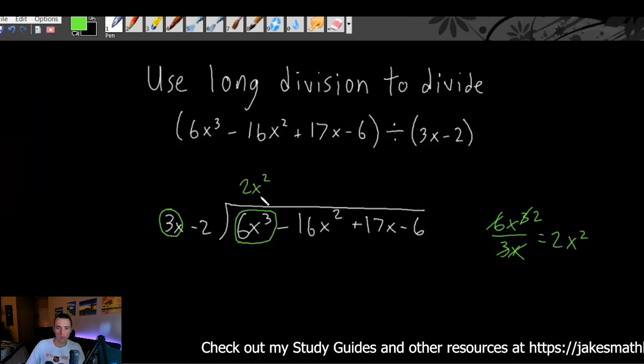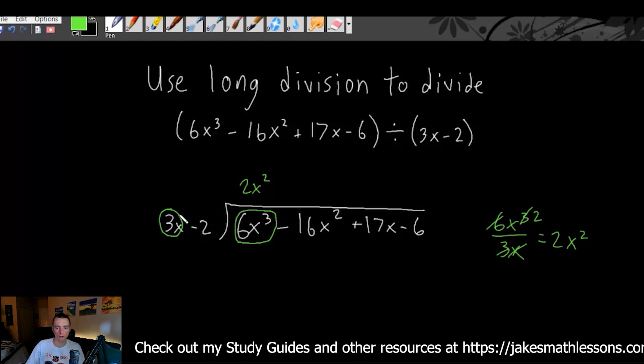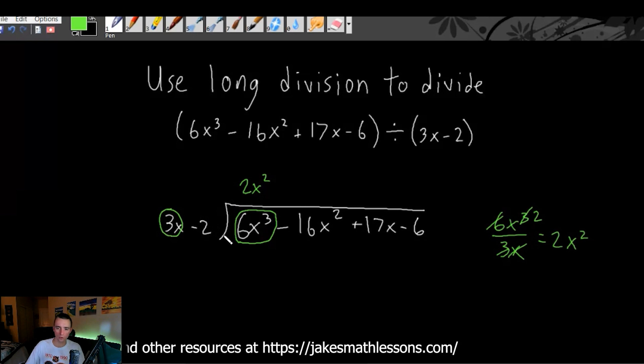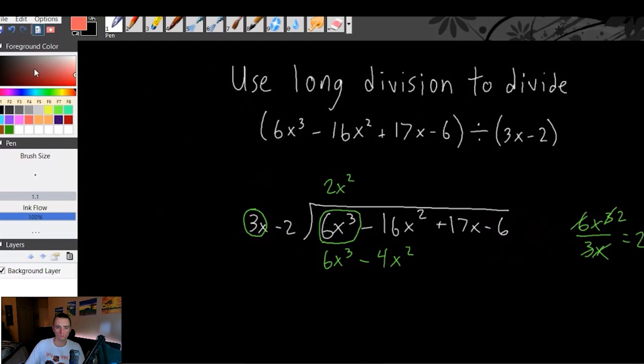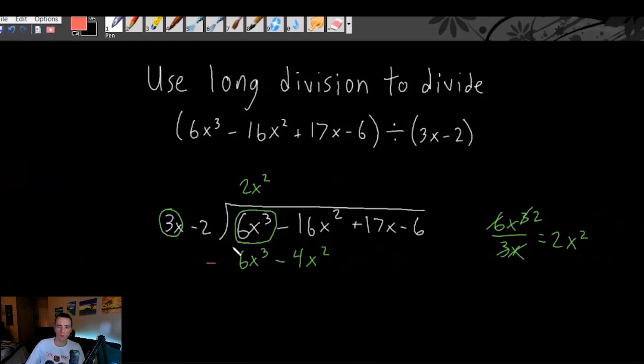Then we take this term that we just wrote up here, multiply it by both of the terms or all of the terms that are over here. So 2x squared times 3x gives us 6x cubed. 2x squared times negative 2 gives us minus 4x squared.